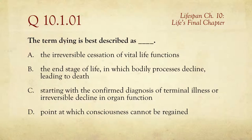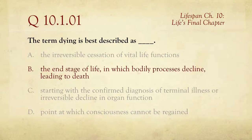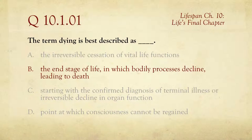Truthfully, I have to admit if it were me, I would have picked A. But we're in a developmental psychology class, and so the one that's going to get you credit is B. Dying — not death — is the end stage of life in which bodily processes decline leading to death. Of course, that assumes death over a certain amount of time, not like you got hit by a truck and you're suddenly dead. That's a different thing.